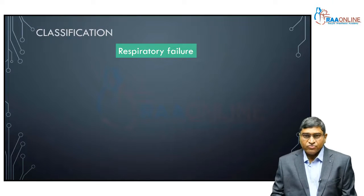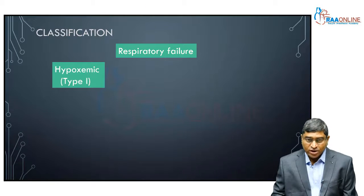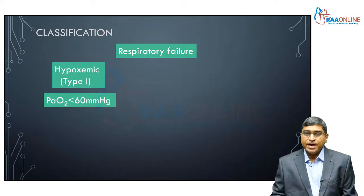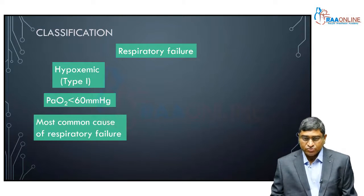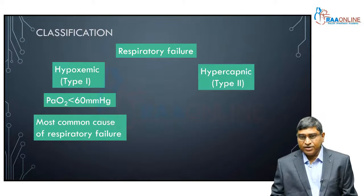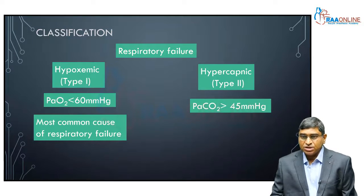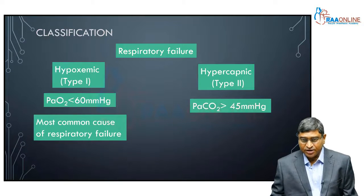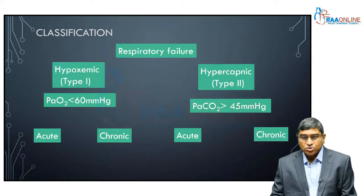The most common cause of respiratory failure is type 1 respiratory failure, or hypoxemic respiratory failure, where there is a failure to oxygenate and the alveolar PO2 is less than 60 millimeters of mercury. This is the most common cause of respiratory failure. Type 2 respiratory failure occurs because of a failure to ventilate, leading to an increase in carbon dioxide to more than 45 to 50 millimeters of mercury, and is not as common as type 1. Both types can also be divided into acute and chronic.